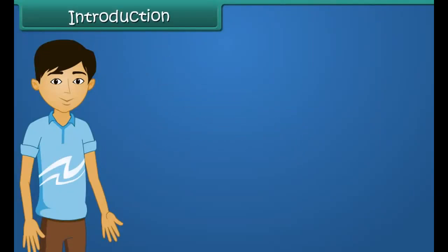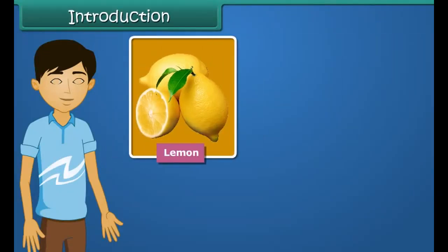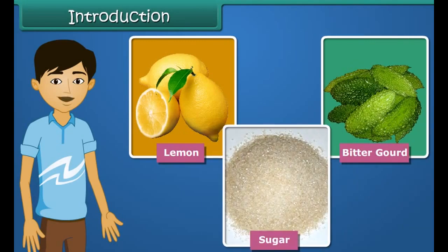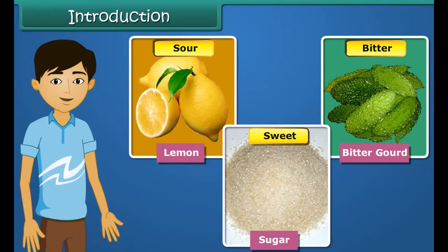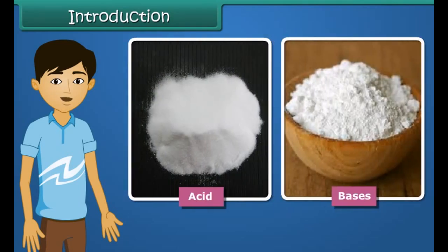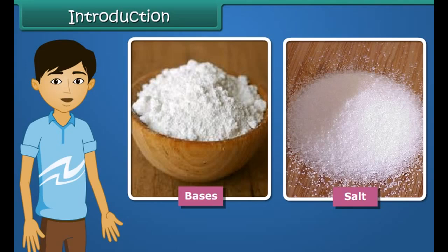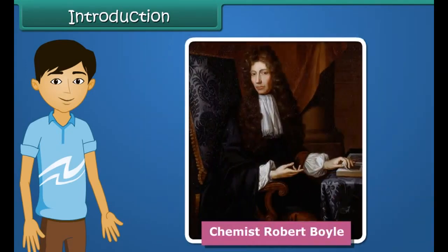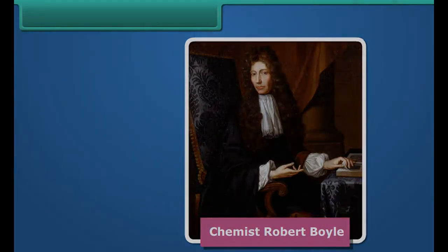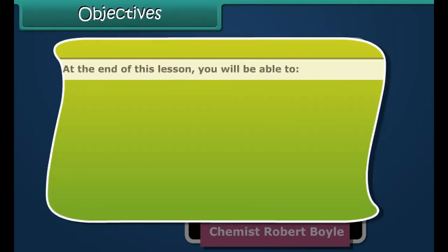Hello students! We have lemon, bitter gourd, and sugar. Some of these foods taste sour, some taste bitter, some taste sweet, and some are salty. The sour, bitter, sweet, and salty taste of foods arises due to the presence of acids, bases, and salts in them. In the 17th century, chemist Robert Boyle first labeled substances as acids and bases. In this lesson, you will study about the properties of acids, bases, and salts.